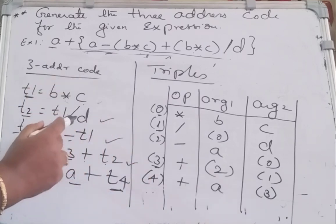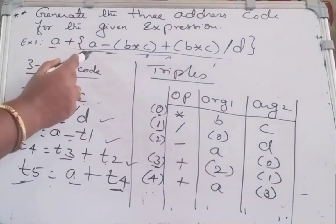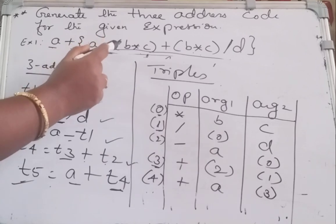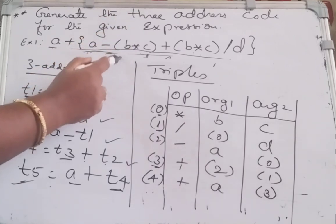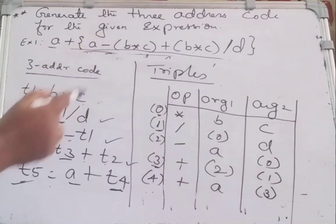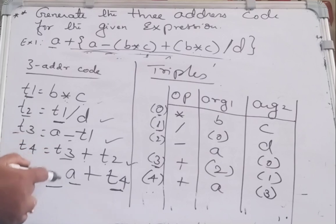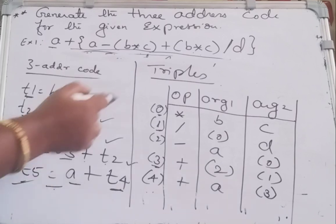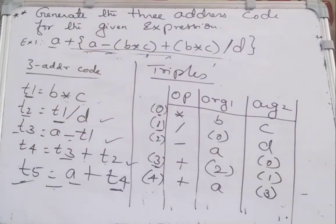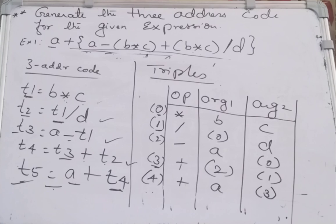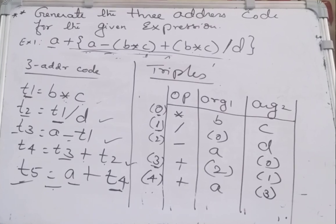To summarize: to generate the three address code, an expression is given; for the expression you construct the DAG; from the DAG you write the three address code; and for this three address code you can generate the triples or the quadruples. Hope you have understood. Please don't forget to subscribe, like, share and comment. Thank you.